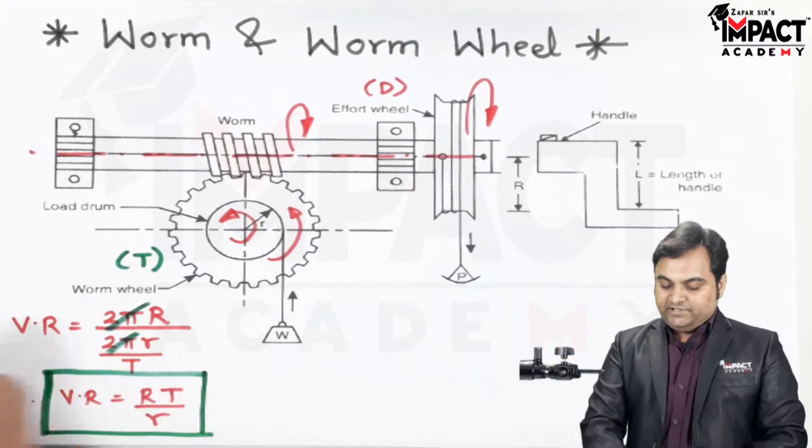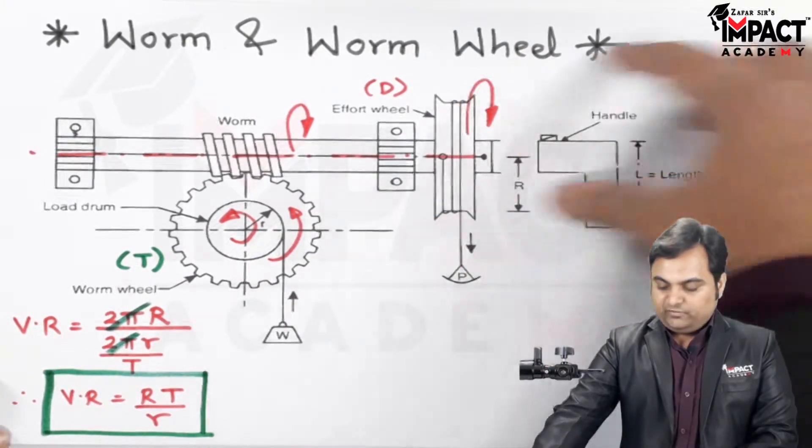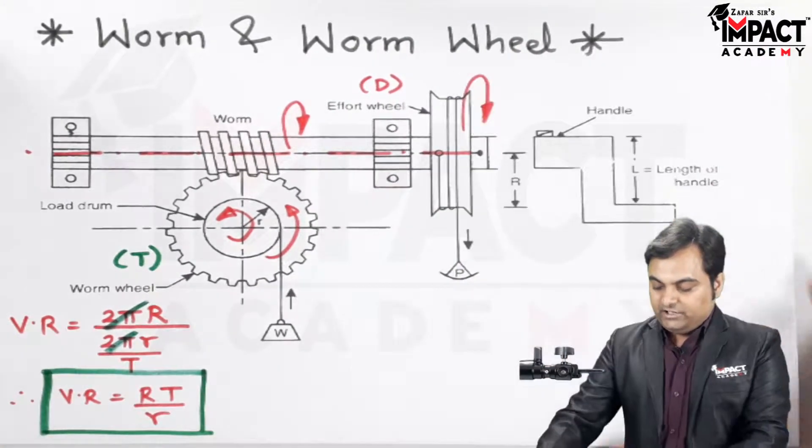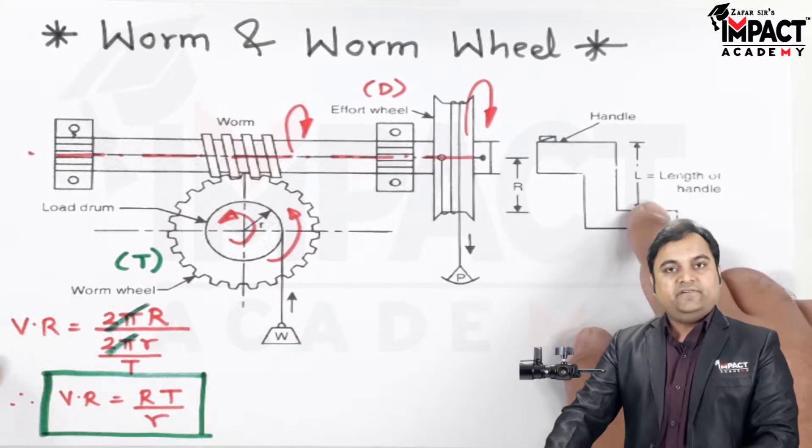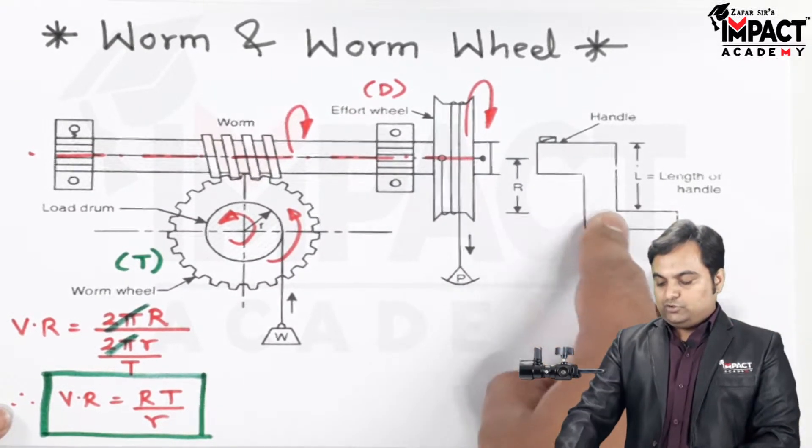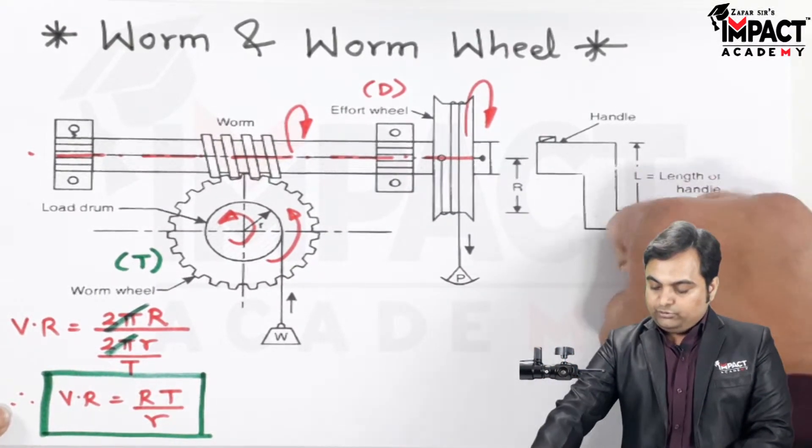Now in a similar attachment, instead of this wheel, when I remove this wheel and attach a handle over here, this handle has a length of capital L, also called the crank. We are going to grip